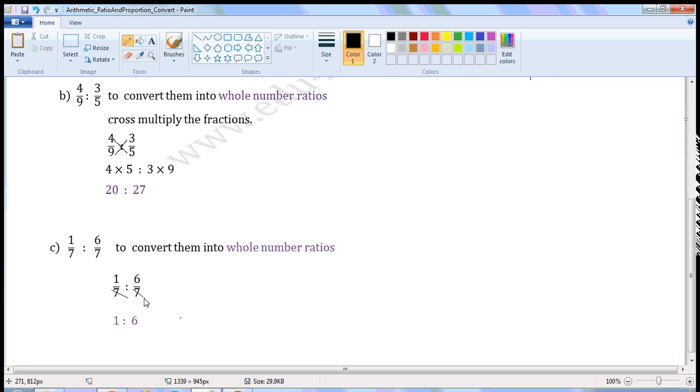Both have the same denominator. So cancel the denominator and write the numerators: 1 is to 6. So 1 to 6 is the whole number ratio of the given ratio 1/7 is to 6/7.